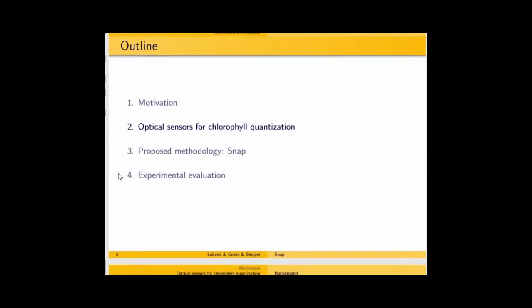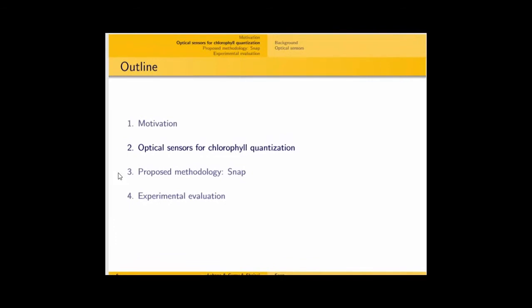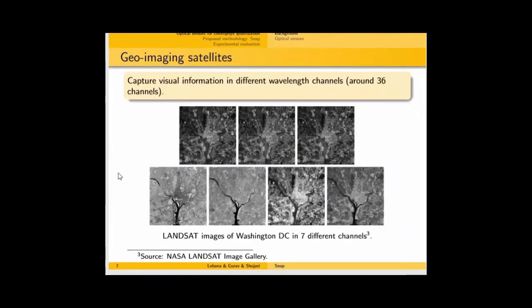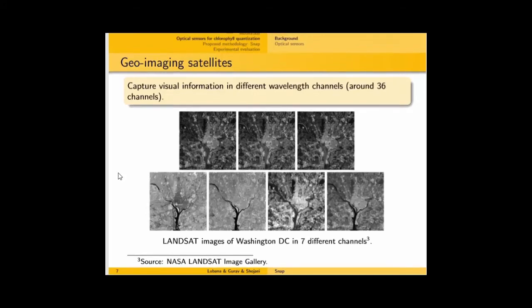So we look into the, since optical sensors have significant accuracy but inefficiency in terms of cost, we look into their methodology and the basic principles behind them. We find that these sensors are using the principles similar to the ones found in geo-imaging satellites which capture spectral information in different wavelength channels. If you look over here, you can see Landsat images of Washington DC in seven different channels.